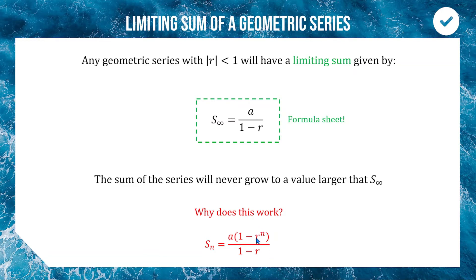The reason this works: in our infinite sum formula, if r is less than one — say r = ½ — then ½ to the power of a very large number becomes tiny, for example ½¹⁰ is about 1/1024. As n grows very large, r^n approaches zero. So you're left with a × (1 − 0) = a, which gives you a/(1 − r). That's why the limiting sum formula works when |r| < 1.